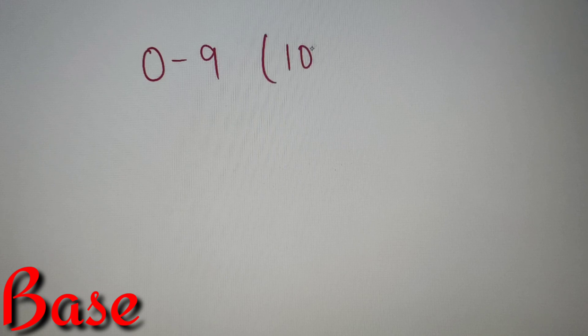Now before discussing the concept of trailing zeros, let us first discuss what is a base. The base of a number is the count of different digits used in that number system. For example, the numbers we use in our daily life are in base 10 because we use digits from 0 to 9 — there are 10 different digits, so the base is 10.